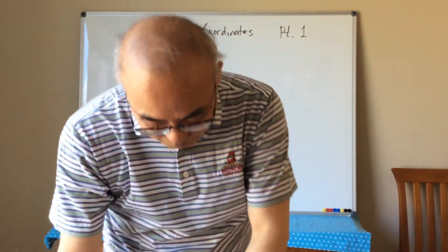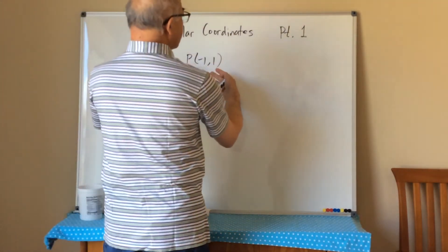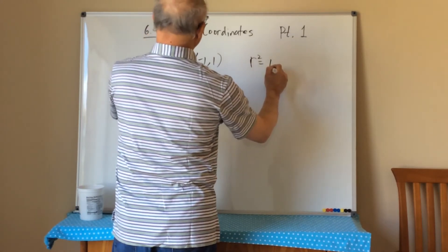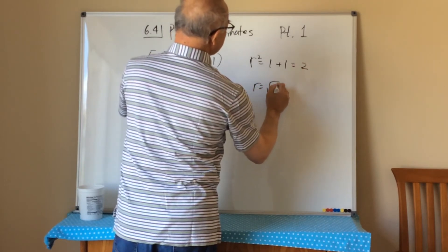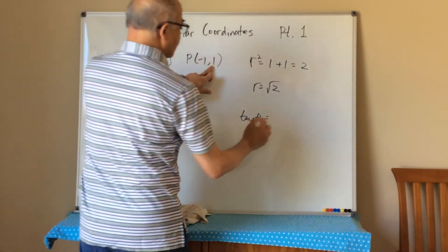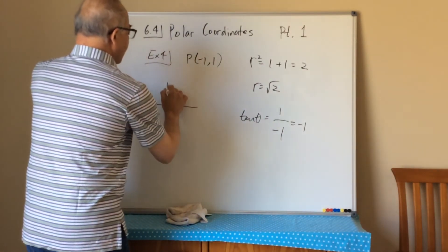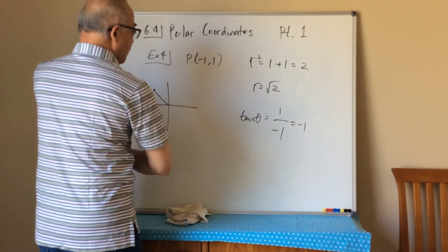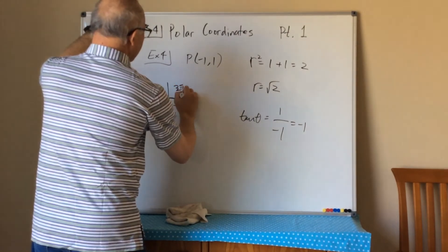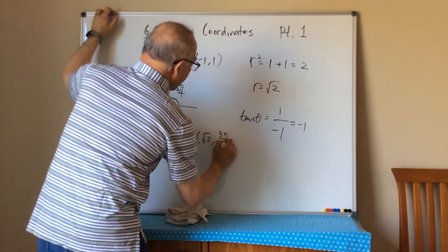Example 4: given Cartesian coordinates, convert to polar. Part a: p is (-1, 1). We know r² = x² + y² = (-1)² + 1² = 2, so r = √2. Then tan(theta) = y/x = 1/(-1) = -1. Since the point (-1, 1) is in the second quadrant, theta = 3pi/4. So the polar form is (√2, 3pi/4).